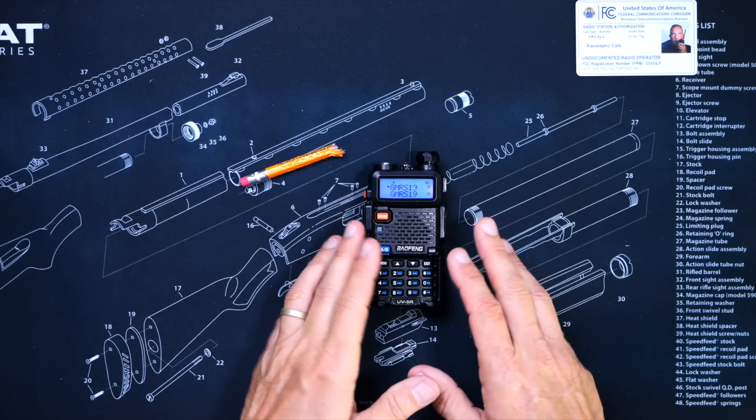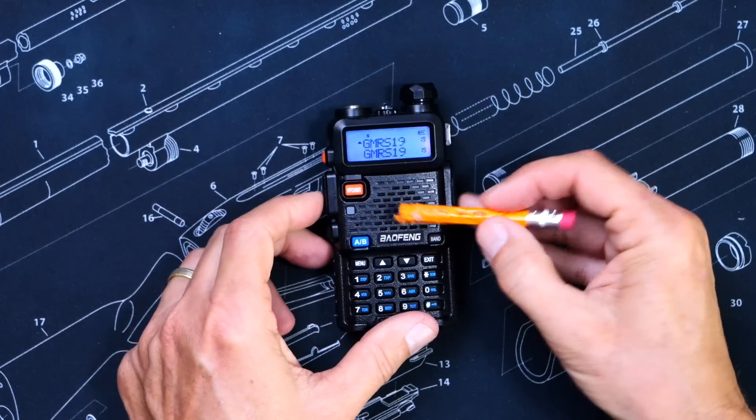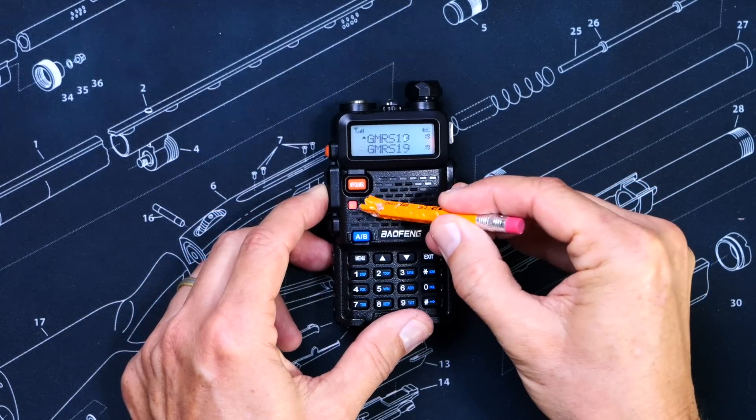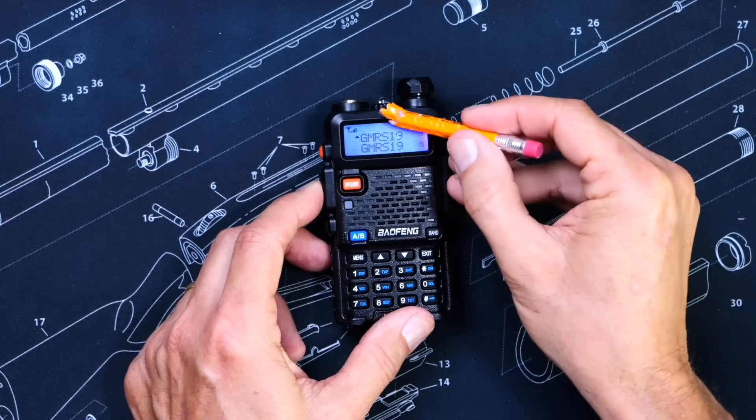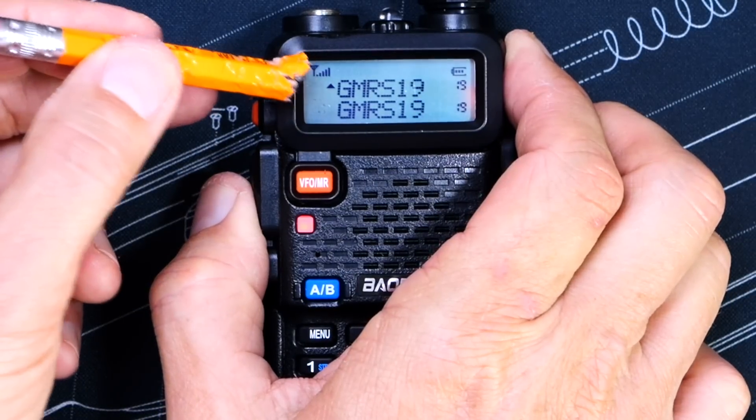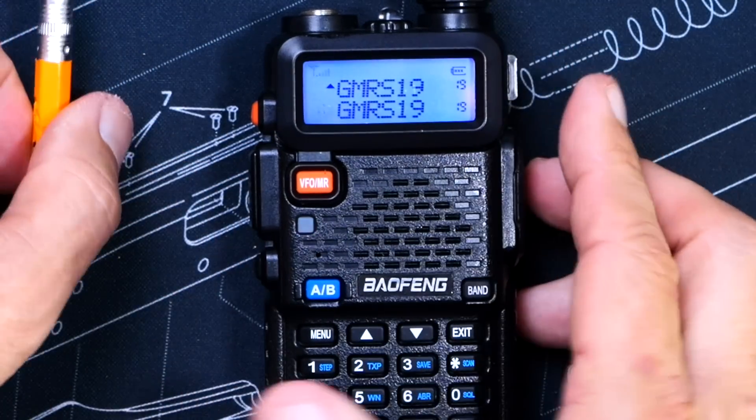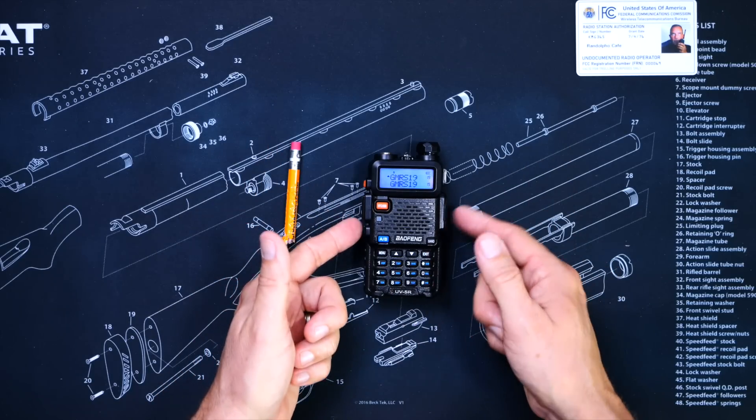So the first thing to check is to make sure that you are both transmitting on the same channel or frequency. The very next thing to check is, is your radio actually transmitting, as indicated by the red transmit light or transmit indicator on the radio?